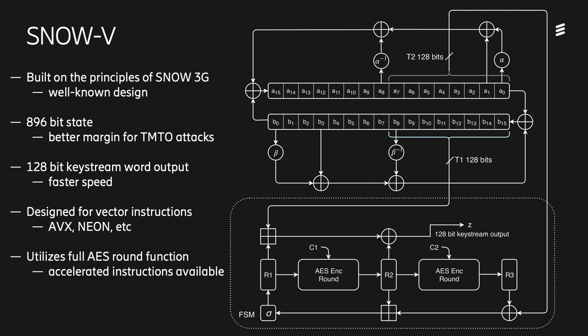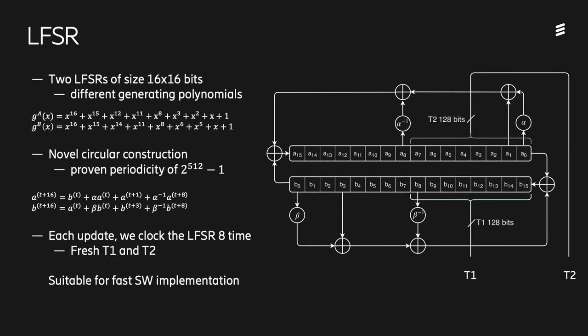The increased state also provides a good security margin in order to meet a higher 256-bit security level. If we take a closer look at the LFSR, it consists of two different LFSRs of size 16×16 bits. Each of these elements are 16-bit wide, and there are 16 elements in each register. The two LFSRs have different generating polynomials, and the feedback is a novel circular construction, where the next element of the LFSR is not only dependent on the feedback polynomial, but also on the first element of the other register. For each update, we clock the LFSRs eight times so that we get fresh tap values T1 and T2 each clocking. This circular construction is very well suited for fast software implementations using vector instructions, and in the paper we have a proof that it achieves the maximum periodicity 2^512 minus 1.